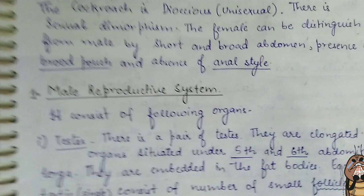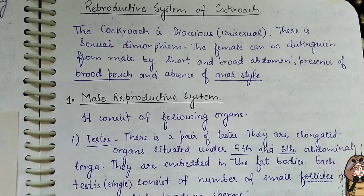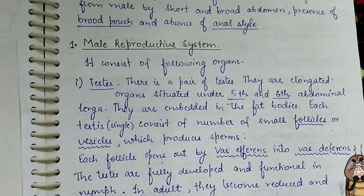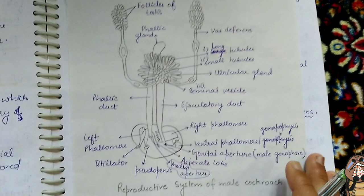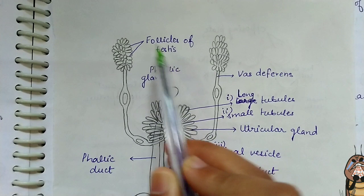Before studying the whole reproductive system of the cockroach, we will study it in two parts: first the male reproductive system, then the female reproductive system. Starting from the male reproductive system, it consists of the following organs, which we can illustrate with the help of a diagram. In the diagram we can see the follicles of testes.